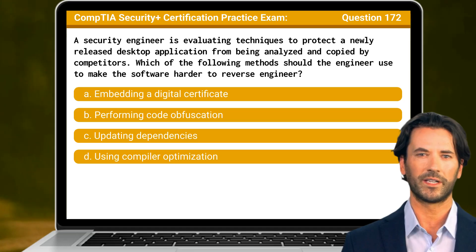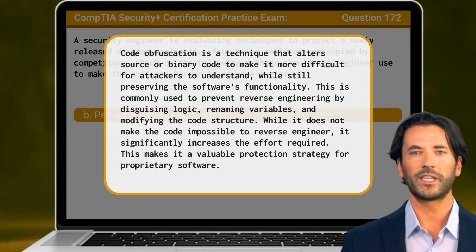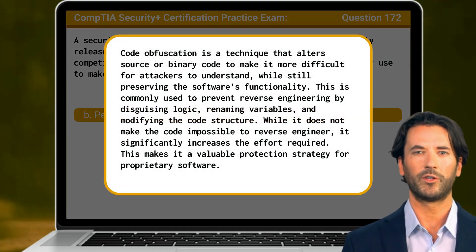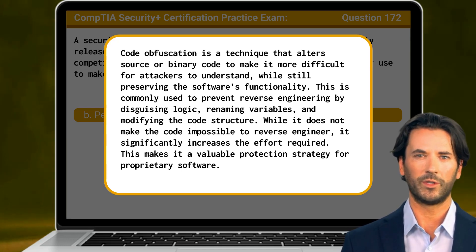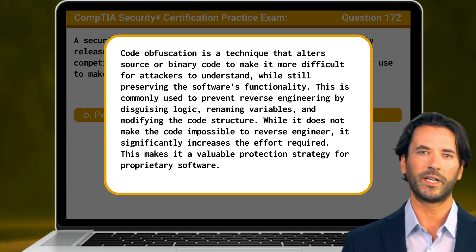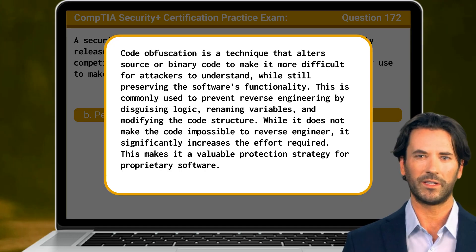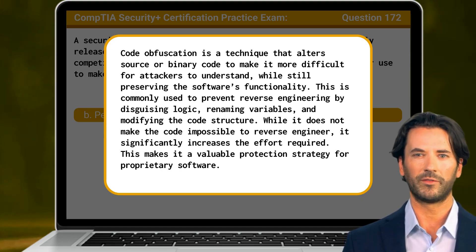The answer is B: performing code obfuscation. Code obfuscation is a technique that alters source or binary code to make it more difficult for attackers to understand while still preserving the software's functionality. This is commonly used to prevent reverse engineering by disguising logic, renaming variables, and modifying the code structure. While it does not make the code impossible to reverse engineer, it significantly increases the effort required, making it a valuable protection strategy for proprietary software.